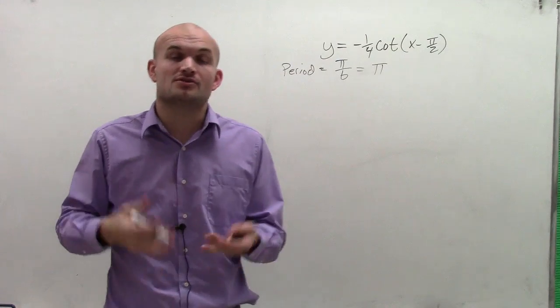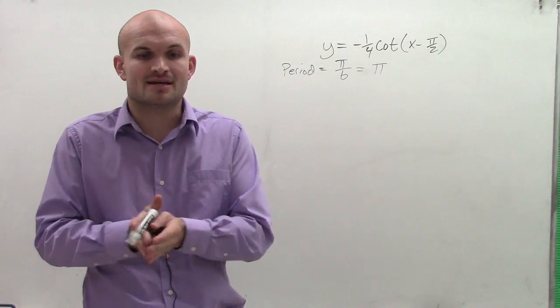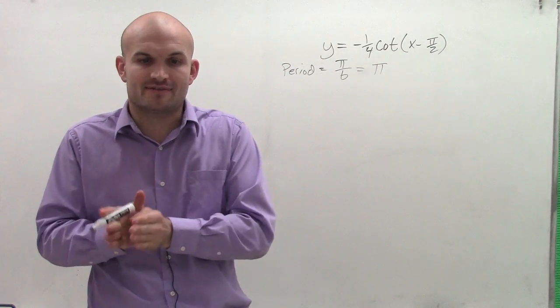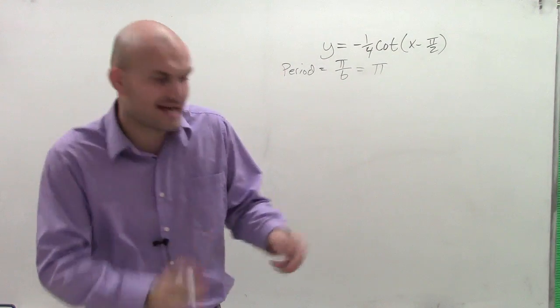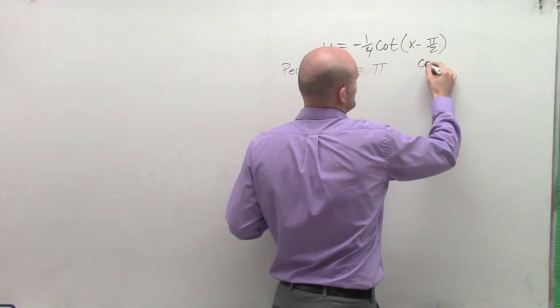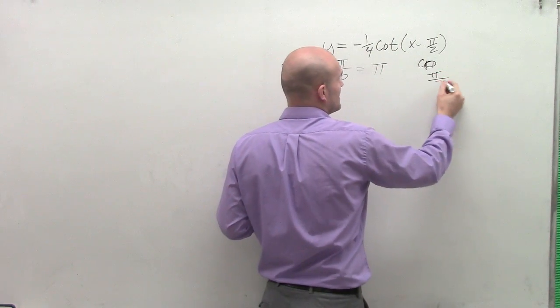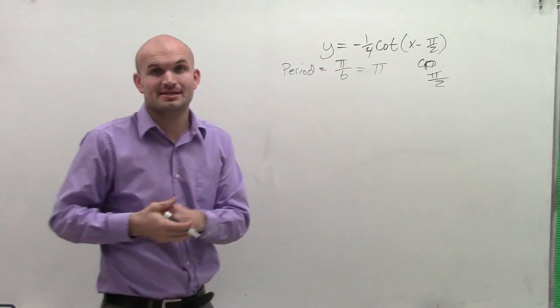Now, in the cotangent graph, we also have two critical points. We have our x-intercept and our asymptote. So that means in a period, you're going to have the distance between your intercept and then your next asymptote. So since there's two critical points, what we're going to do to find the critical points is take your period and divide it by 2, which in this case is pi halves.